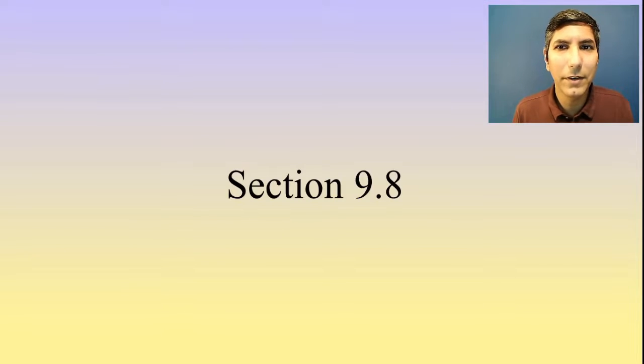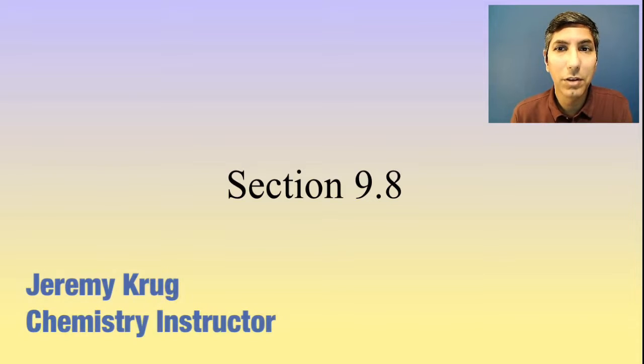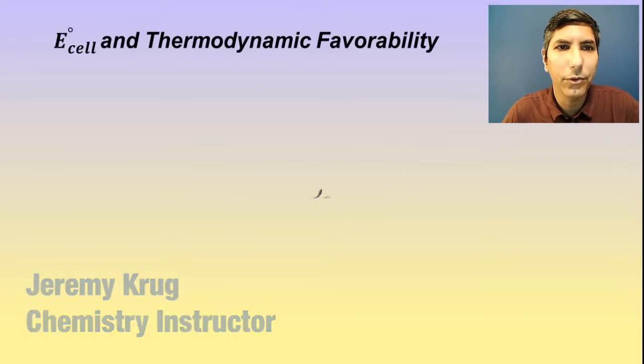Hi there, I'm Jeremy Krug, and in this video we're going to take a look at AP Chemistry Unit 9, Section 8, which is all about the thermodynamic favorability of electrochemical cells.